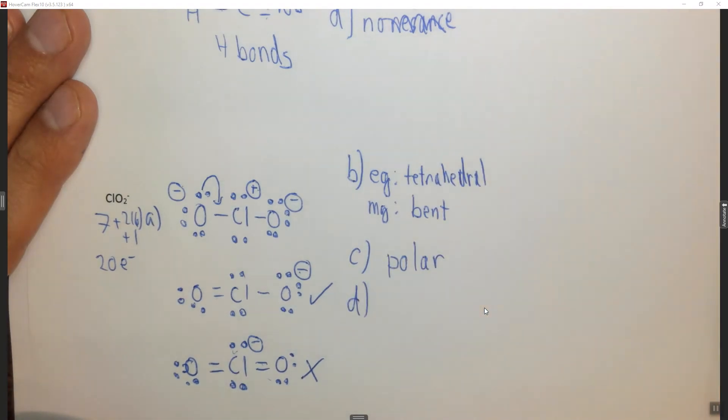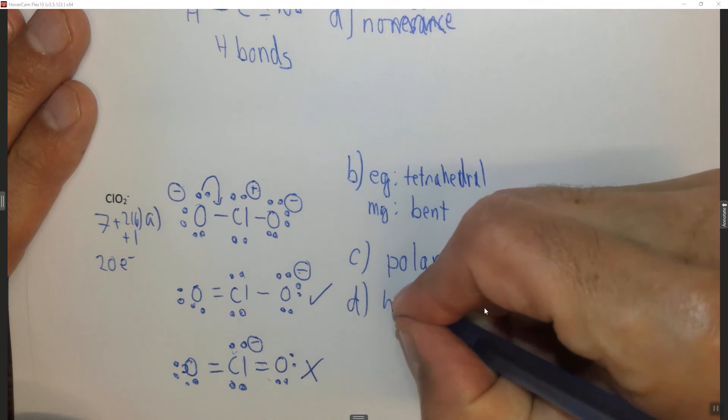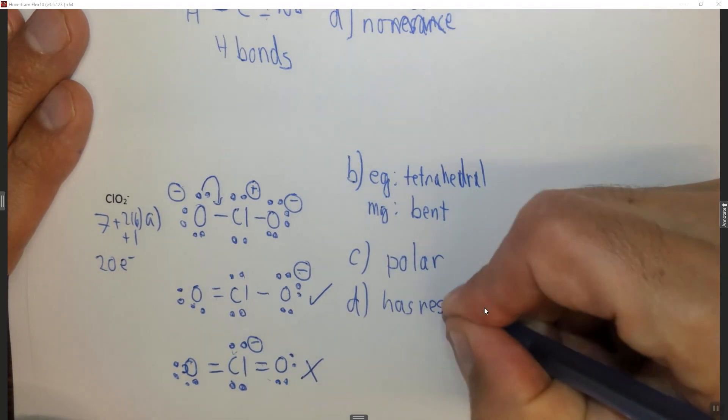D, does this molecule have energetically equivalent resonance? In this case, we have resonance, because this double bond can be on this side, or this double bond could be on this side. So you could put has resonance.